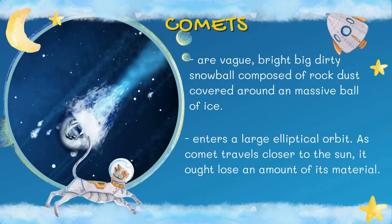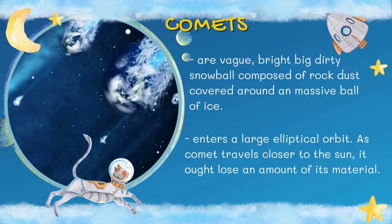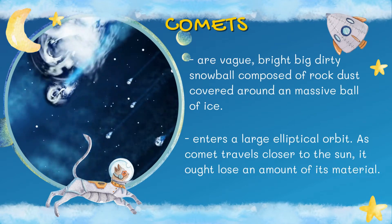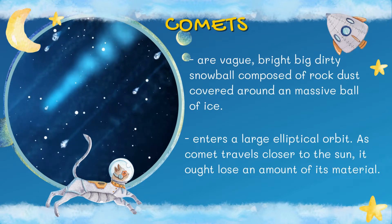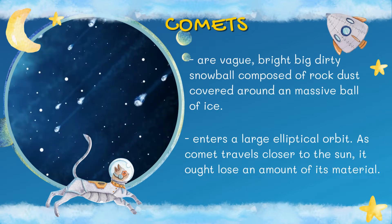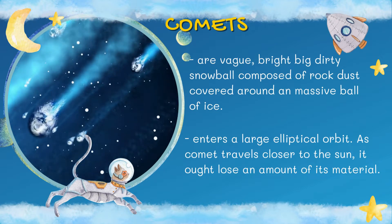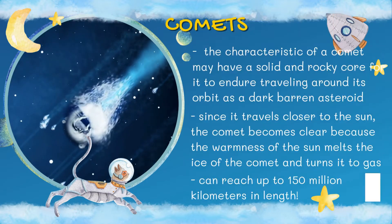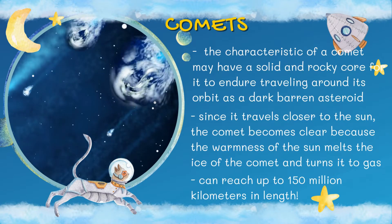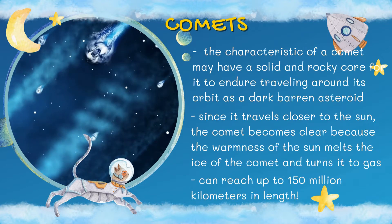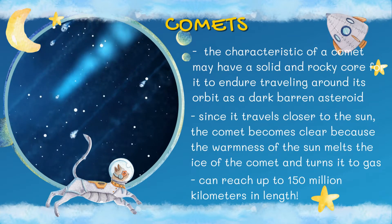Some characteristics of a comet: it is a bright, big, dirty snowball composed of rock dust covered around a massive ball of ice. This charming sight within the sky moves very slowly but remains in our sight for weeks before disappearing. A comet enters a large elliptical orbit. Because the comet travels closer to the sun, it loses an amount of its material. When it returns, it slowly appears smaller and dimmer until it disappears completely. A comet may have a solid and rocky core, allowing it to endure traveling around its orbit as a dark barren asteroid.